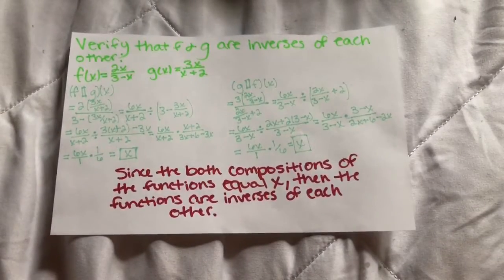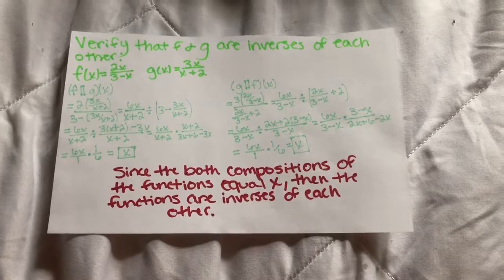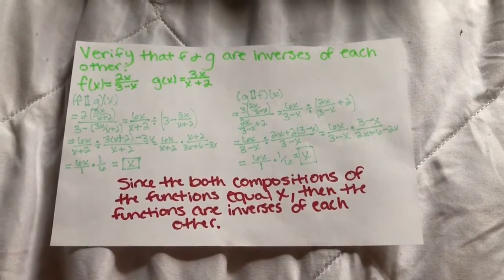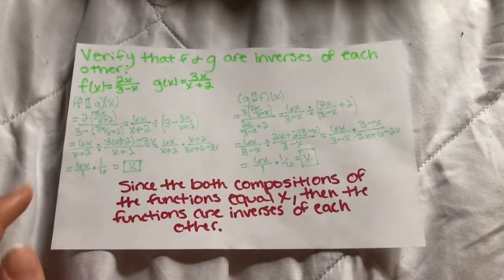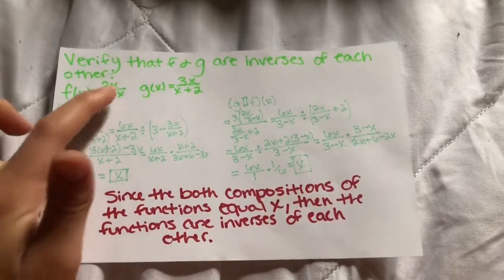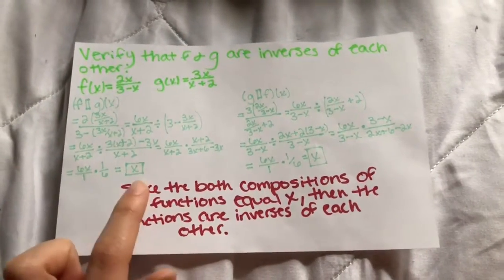Verify that f and g are inverses of each other. f(x) equals 2x/(3 - x) and g(x) equals 3x/(x + 2). So basically to find out if they're inverse of each other, all you have to do is plug in for both of them. So here you have f(x) and you're just going to plug in where the x is, the g(x) equation. And all this work is going to end up with x.